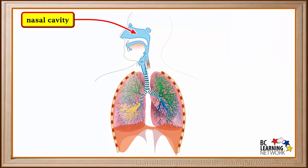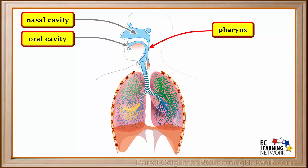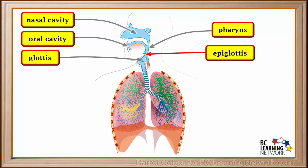The air you breathe in with your nose goes into the nasal cavity. Hairs and mucus in the nasal cavity trap some particles, and the air is also warmed and moistened. Of course, you can also breathe in air through your mouth or oral cavity. Air from both the nasal and oral cavities goes into the pharynx or throat. The opening at the top of the windpipe or trachea is called the glottis. A flap of tissue called the epiglottis covers the glottis when food is being swallowed, which prevents food from entering the respiratory tract.